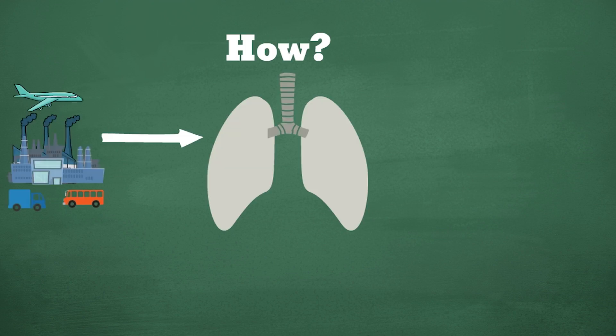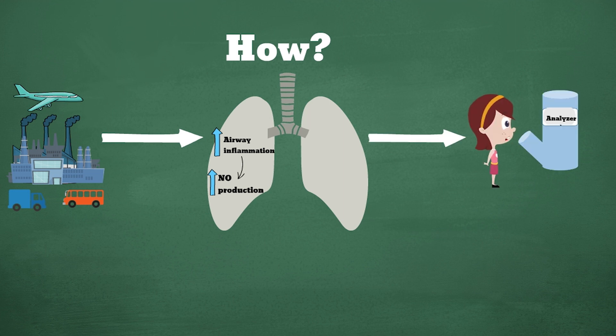So how does it work? Exposure to air pollution causes airway inflammation. Airway inflammation causes increased production of NO in the lungs. This NO can be detected by simply exhaling into an analyzer.